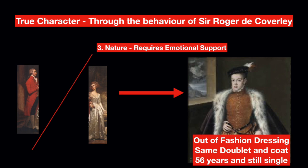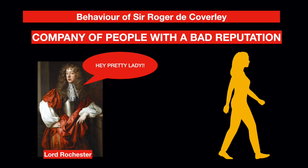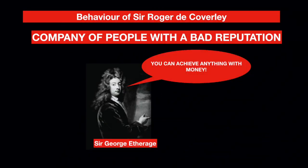His next limitation is that he requires emotional support. He has just been through a breakup with a widow, and the effect of that breakup is still on him — he doesn't care about dressing well and still wears old-fashioned dress, the same doublet and coat that was once in vogue. He is 56 years old and doesn't have stability in his life. He also likes to be in the company of people with bad reputation, such as Lord Rochester, who is by nature a Casanova, and Sir George Etherege, who is an opportunist who bought his knighthood just to marry a widow.